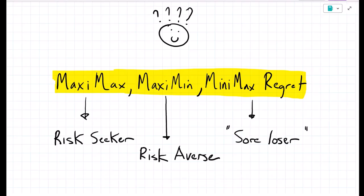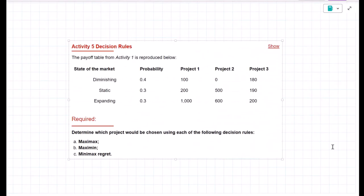Let's now move on to an example and I'll demonstrate these three decision rules with some numbers. I've got an activity open from the study hub. If you'd like to try this on your own, you could pause the video now and continue after you've given it a try.